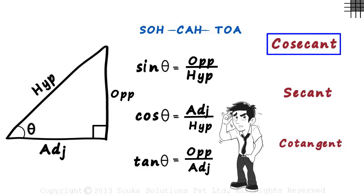Take cosecant for example. We know that a secant is a line that intersects the circle at two points. But where is the circle? Where is the line? And where are the two points?